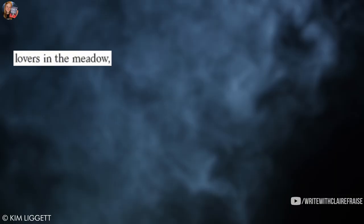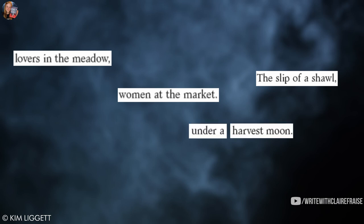The first page continues building up the mystery of the grace year with secrets and whispers. Kim Lidgett drops hints about what the world is going to be like without explicitly telling readers anything. She uses phrases like "lovers in the meadow," "women at the market," "the slip of a shawl," and "under a harvest moon." These phrases don't tell you anything specific about the world building, but they hint that it's not a contemporary world — maybe historical fiction or a magical realism interpretation of a historical society. Just the way it's written signals to readers that this is not a contemporary book.